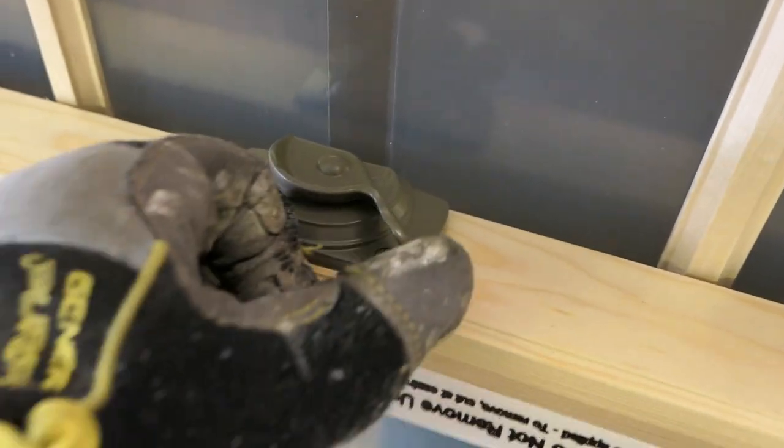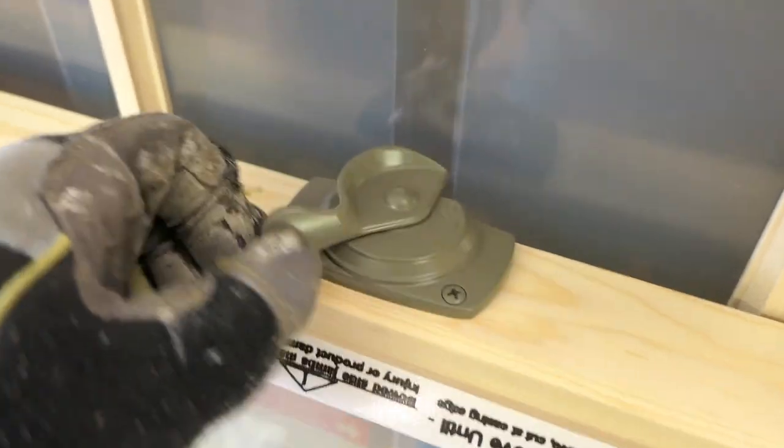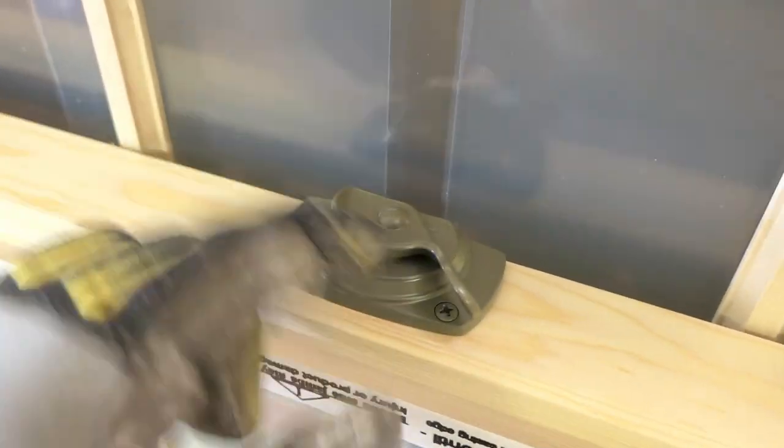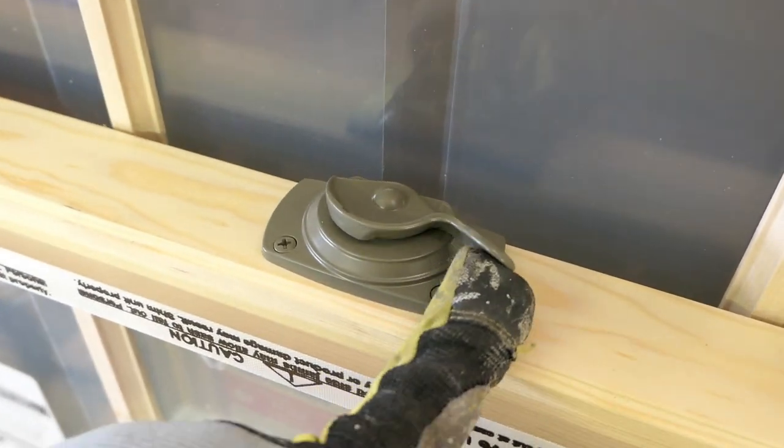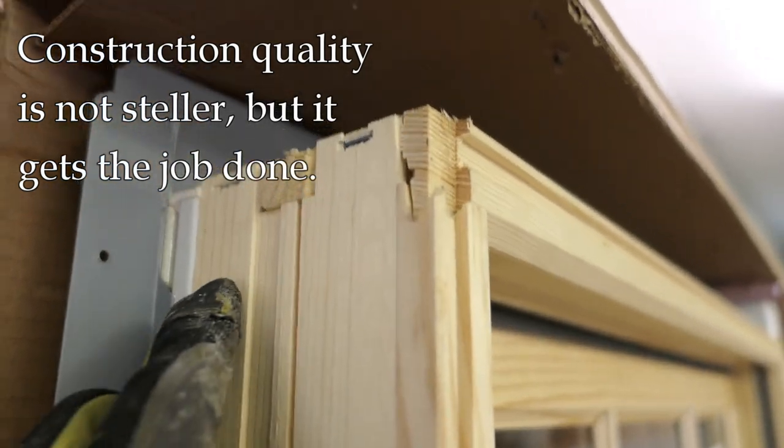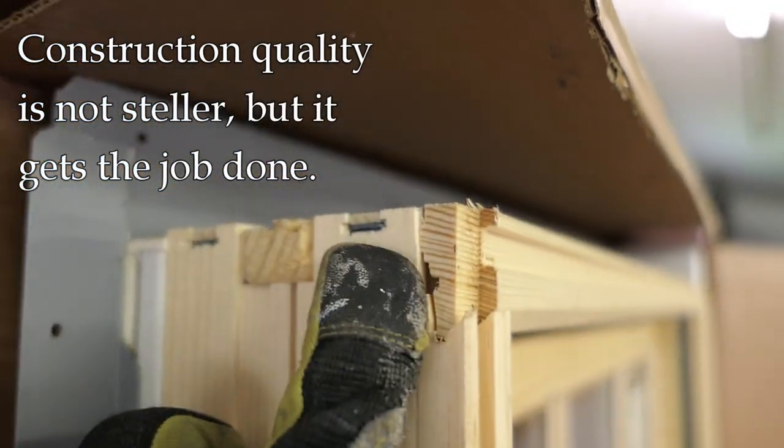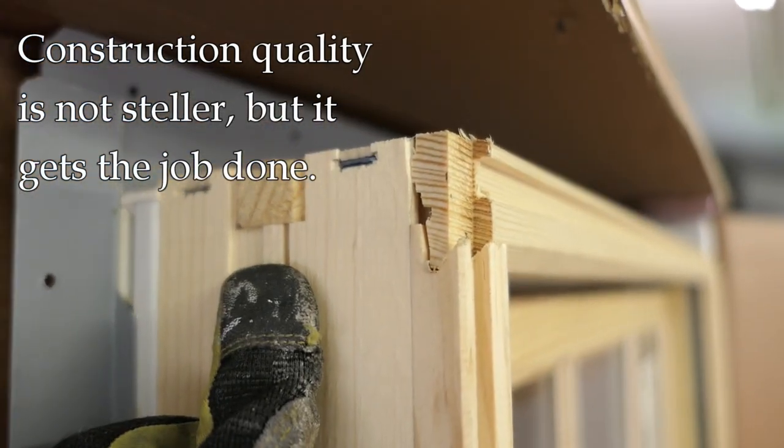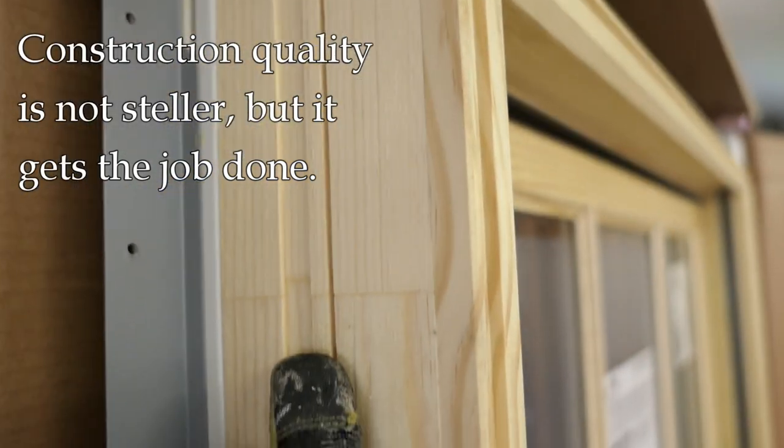Notice there's a recess here, and that's for jam extensions if you put those in. This window lock serves two purposes. The color is whatever you picked when you ordered the unit.